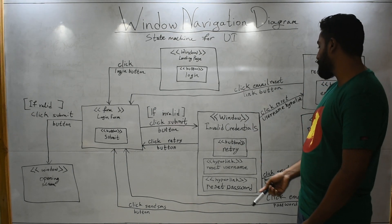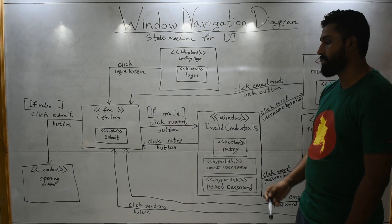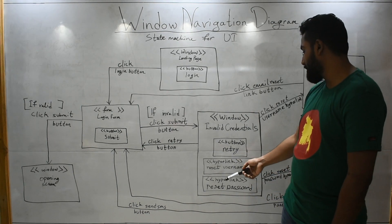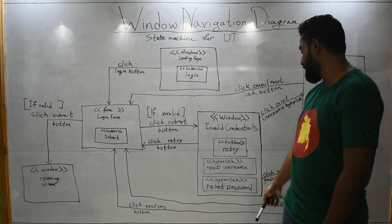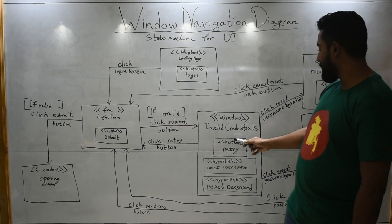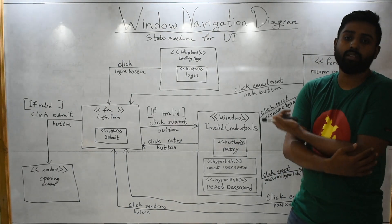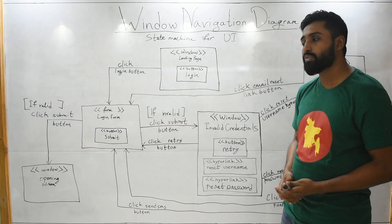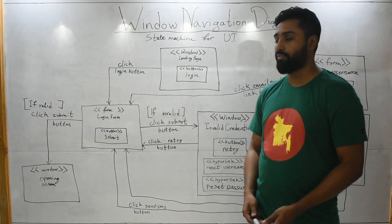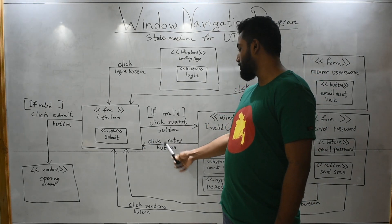In the invalid credentials window, you may have a retry button. You may also have hyperlinks for 'reset username' and 'reset password'. When you press the retry button, it brings you back to the login form, as shown by this arrow labeled 'click retry button'.